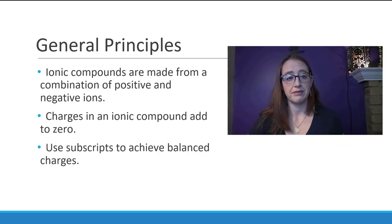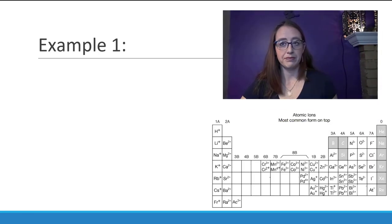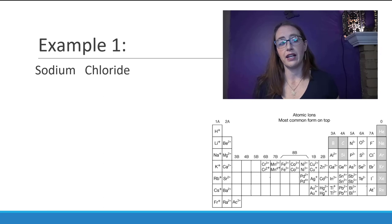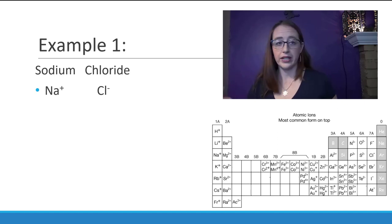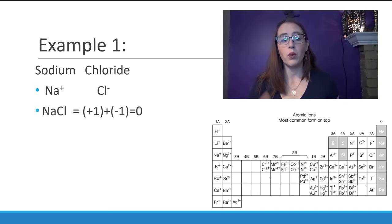Let's do an example. Here we have sodium chloride. We want to write out the ions of each species first. So this would give us sodium one plus and chlorine one minus. Now these need to balance to zero in order to make an ionic formula. In this case the sodium is plus one and the chlorine is minus one.